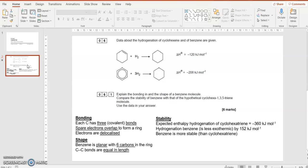If we look at the stability of the ring, it's more stable than you'd expect. If we have a look at some data there, if we add hydrogen by electrophilic addition across a carbon to carbon double bond in cyclohexene, every time a hydrogen is added across that double bond it releases 120 kilojoules per mole of energy.